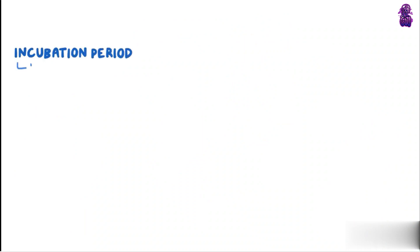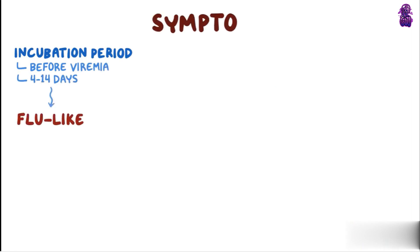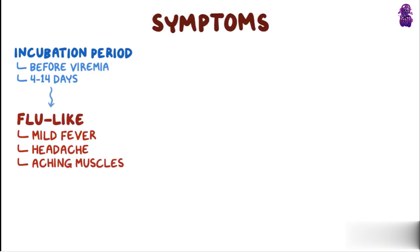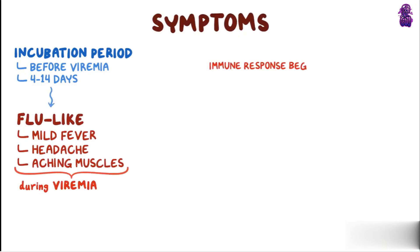The incubation period for Parvovirus B19 — basically the period before viremia starts — is between 4 and 14 days, after which symptoms develop. Flu-like symptoms, like a mild fever, headache, and aching muscles, are most common during viremia.